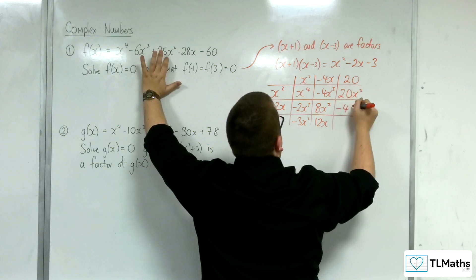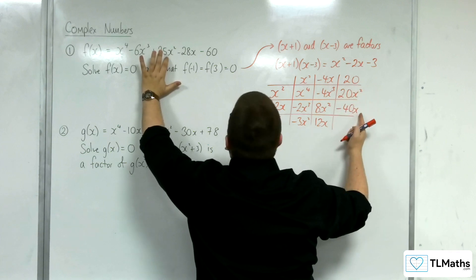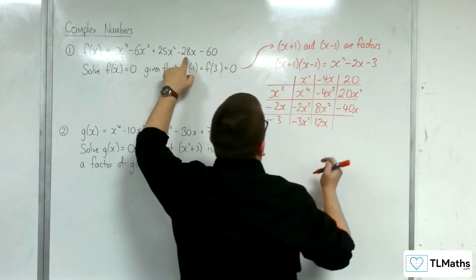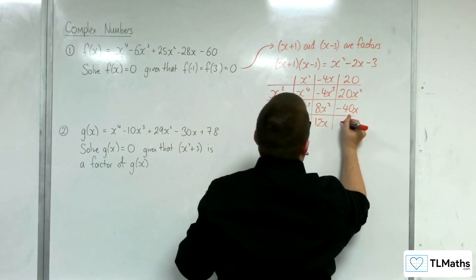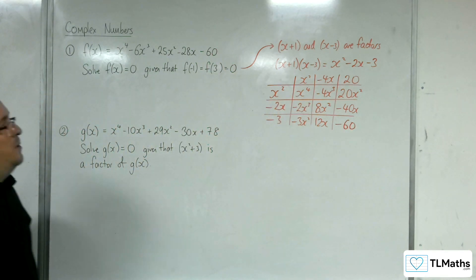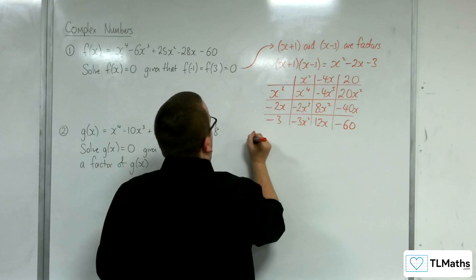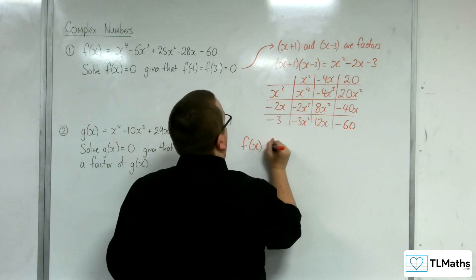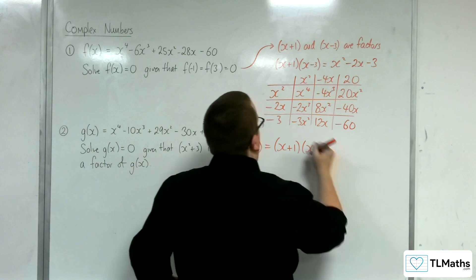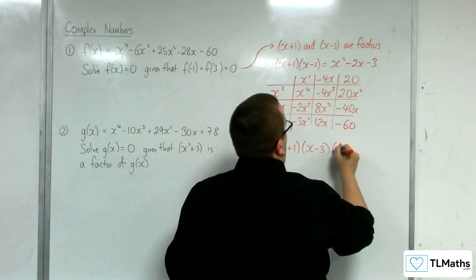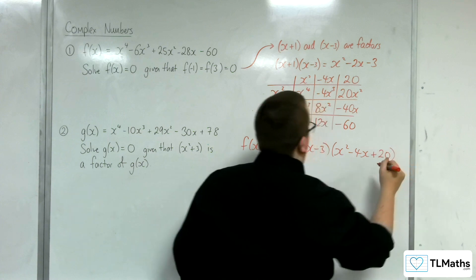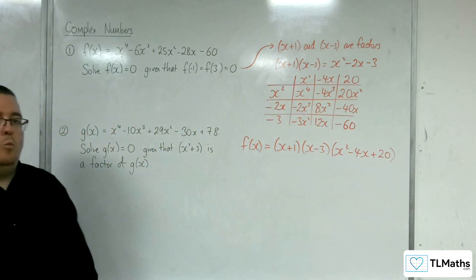I'd have -40x there. -40 plus the 12 makes the -28. So I know that's on the right tracks. And 20 lots of -3 is -60, which is what I wanted. So I've managed to write f(x) as (x+1)(x-3) times by x² - 4x + 20. So doing the polynomial division in one go.